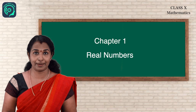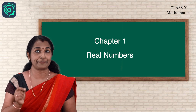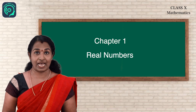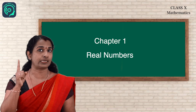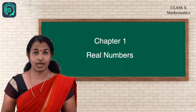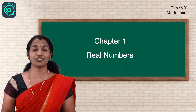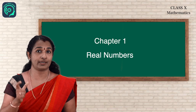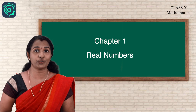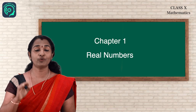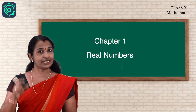What does this theorem say? Every composite number can be expressed as the product of primes, and this factorization is unique apart from the order in which the prime factors occur. I am going to divide this theorem into three parts.